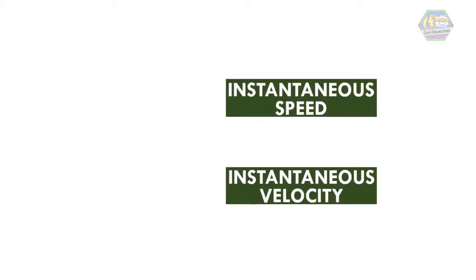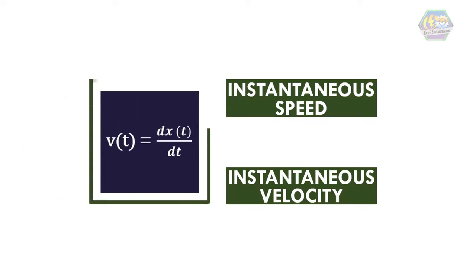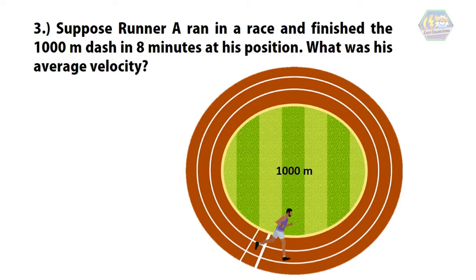There is another concept about speed and velocity: instantaneous speed and instantaneous velocity. In calculus, it is expressed as the derivative of position x at a given time t. In layman's terms, it is the speed or velocity at a specific instant in time.